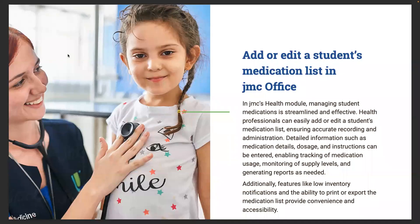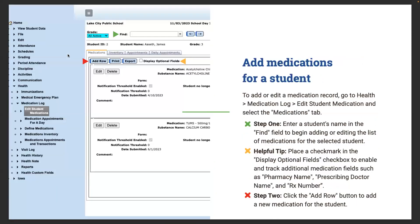In JMC's health module, managing student medications is streamlined and effective. Health professionals can easily add or edit a student's medication list, ensuring accurate recording and administration. Detailed information such as medication details, dosage, and instructions can be entered, enabling tracking of medication usage, monitoring of supply levels, and generating reports as needed. Features like low inventory notifications and the ability to print or export the medication list provide convenience and accessibility. To add or edit a medication record, go to Health, Medication Log, Edit Student Medication, and select the Medications tab.